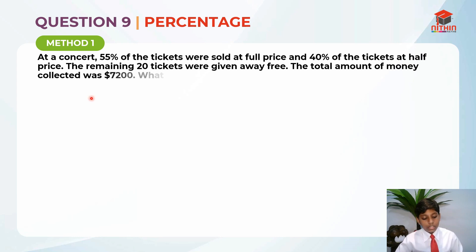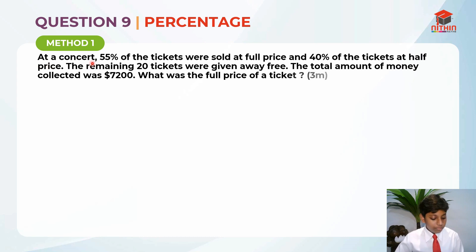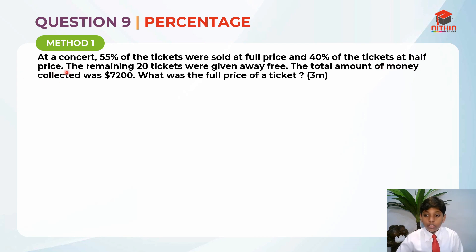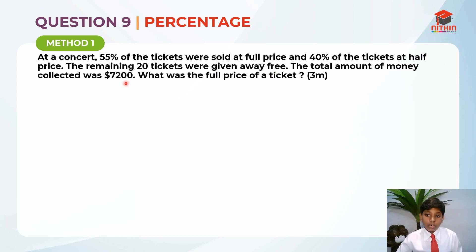Let's read the question first. At a concert, 55% of the tickets were sold at full price and 40% of the tickets at half price. The remaining 20 tickets were given away free. The total amount of money collected was $7,200. What was the full price of a ticket? This question is awarding us 3 marks.